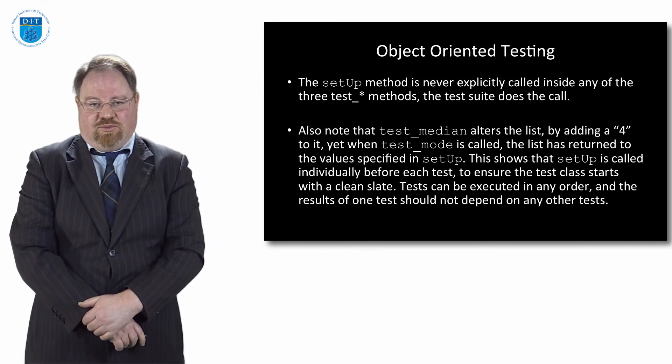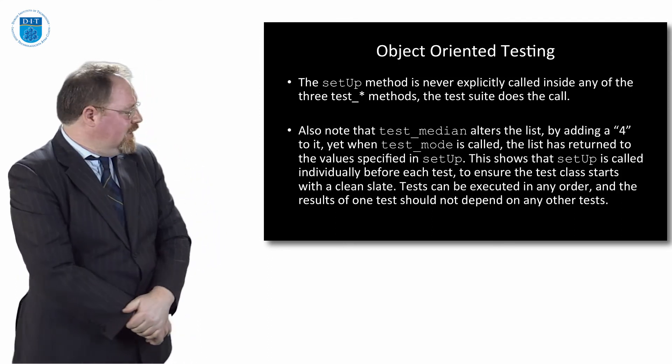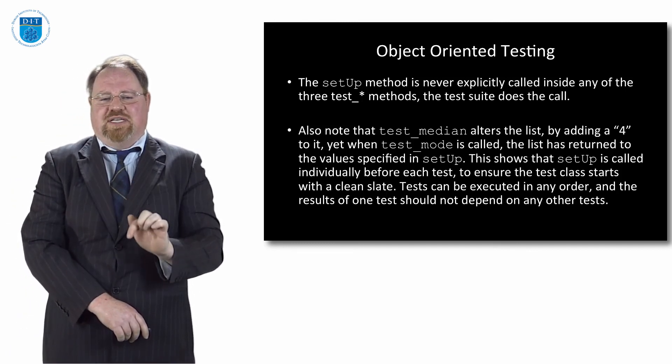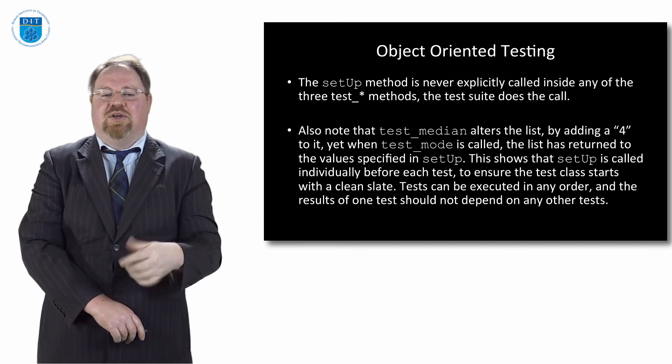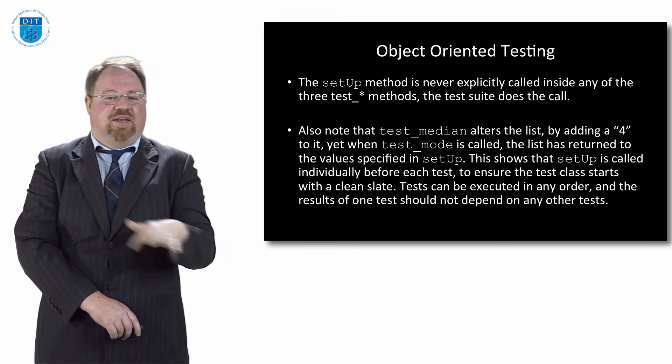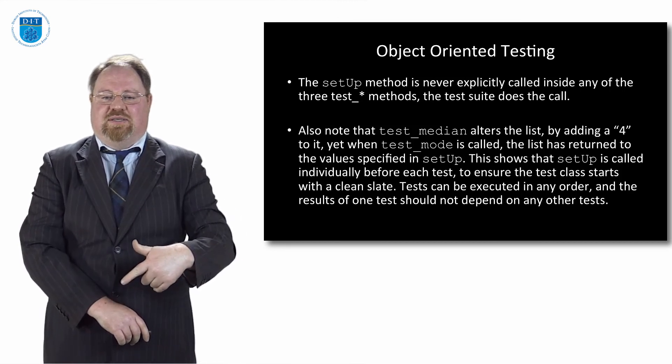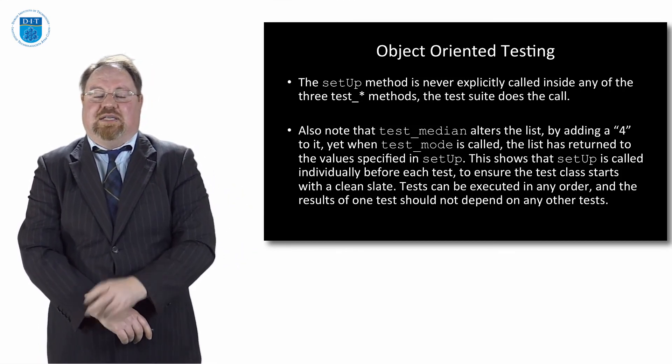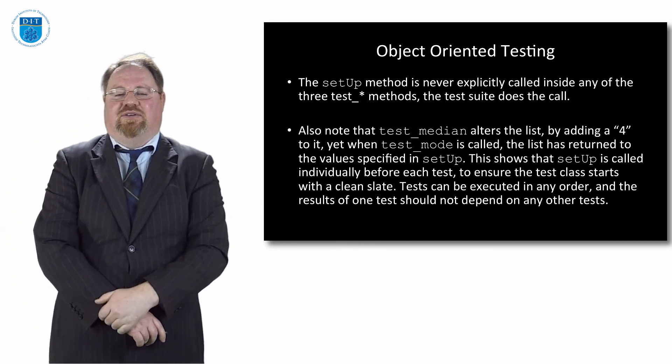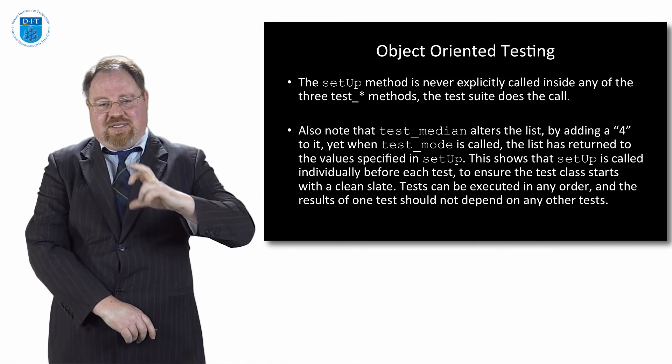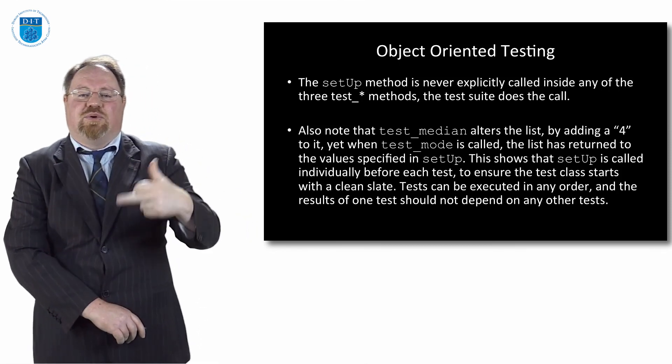As you will have noticed, the setUp method is never called explicitly within any of the three test methods. The test suite does that for us. It's also important to note that test_median, test_mode and test_mean are completely independent of each other. When I run test_median, even though I've added the number four onto the list, when I run test_mode which is the next method, that value is not on the list. It gets reset back to the original values on the list. Because every time I finish a method, it recalls setUp again and re-initializes the list to the original list. So in that way, the test can be executed in any order and the results of one test do not depend on another test. If we want to make changes, keep them all in the same test method. But if we call two different test methods, the values in one will not impact the values in the other because each one will call setUp separately.